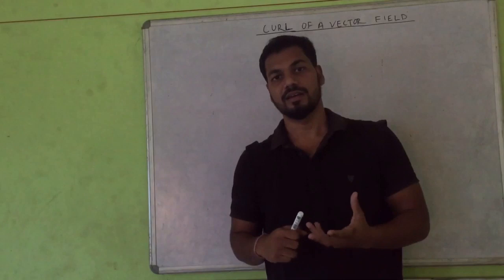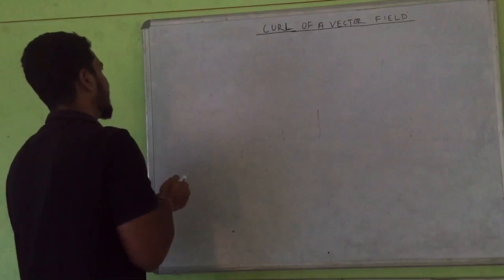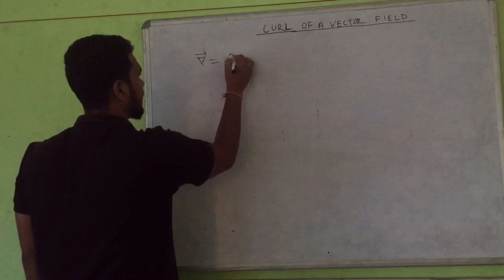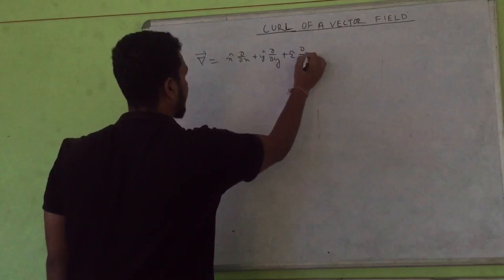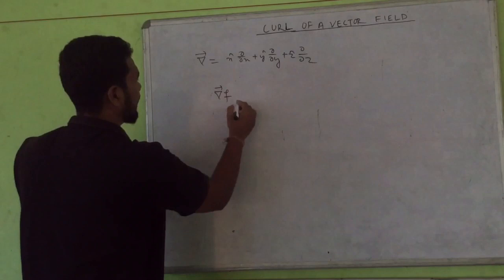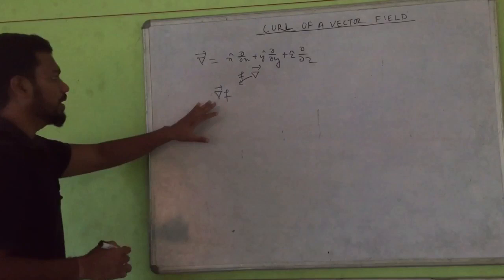First, let's see the definition of curl. Earlier we have already discussed the grad operator, which is simply denoted by x-cap del upon del x, plus y-cap del upon del y, plus z-cap del upon del z. If we operate the grad operator on a scalar function, then we will get the gradient — a vector result.